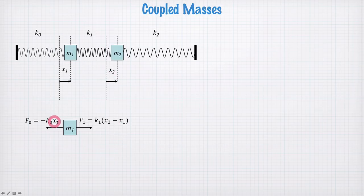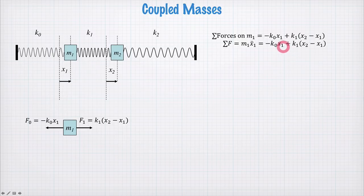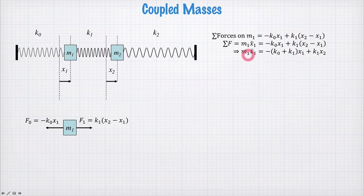So these are the forces on mass m1. We can add them up to get the total force, and then the total force equals mass times acceleration. Collecting terms multiplying x1 and x2, we have this equation for mass m1 and the variable x1.